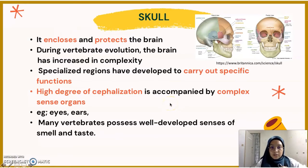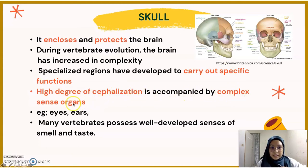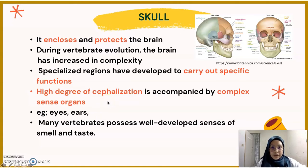The next characteristic is the skull, which encloses and protects the brain. During vertebrate evolution, the brain has increased in complexity, with specialized regions developing to carry out specific functions. Complex sense organs include eyes, which develop as an outgrowth of the brain. In aquatic vertebrates, ears function primarily as equilibrium devices, while in land vertebrates, they function as sound wave receivers. Many vertebrates also have well-developed senses of smell and taste.